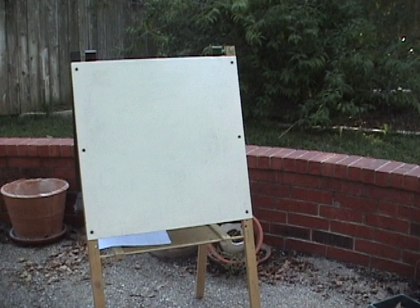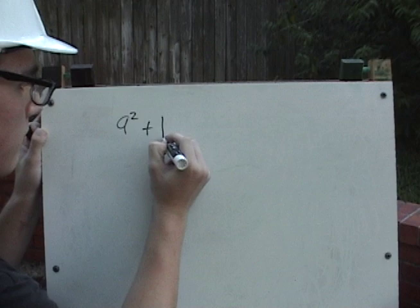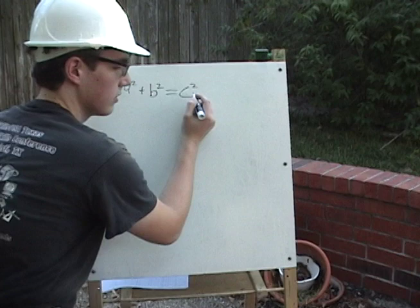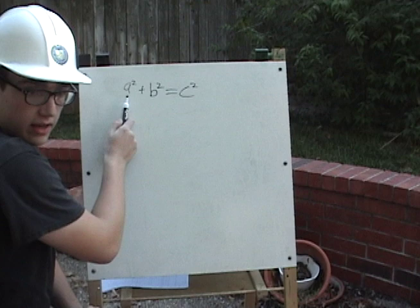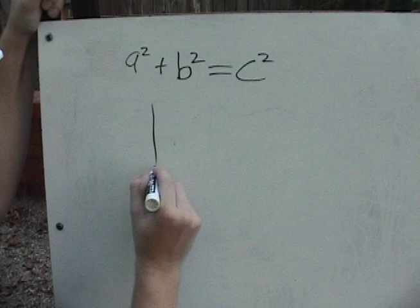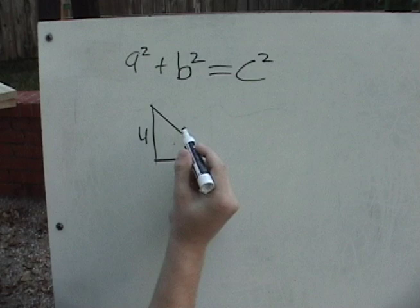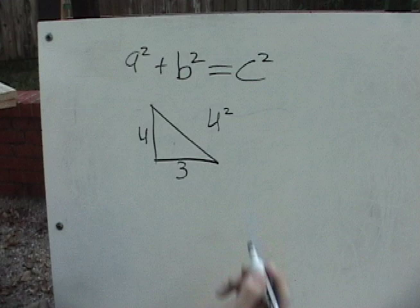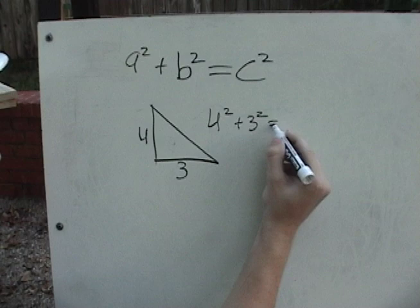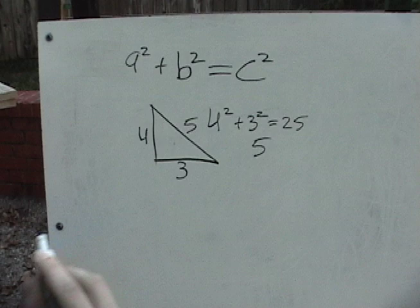The actual equation for the Pythagorean Theorem is a squared plus b squared equals c squared. What this means is that when we square A and add it to the square of B, we get the hypotenuse squared. So for example, suppose we have a triangle where A is 4 and B is 3. We take 4 squared, add it to 3 squared, which gives us 25. And the square root of 25 equals 5. So this length right here is going to be 5. Simple as that.